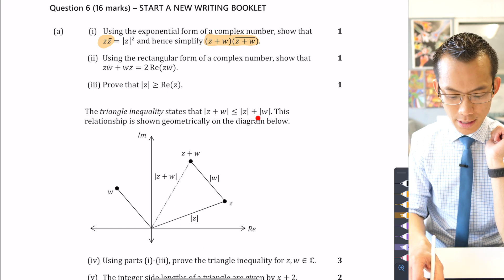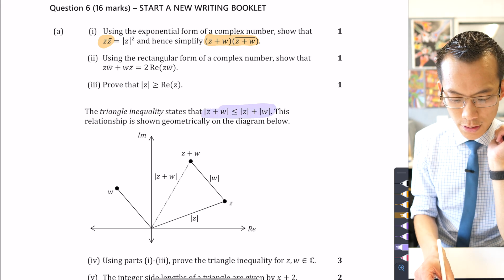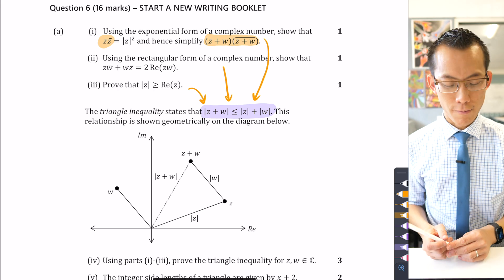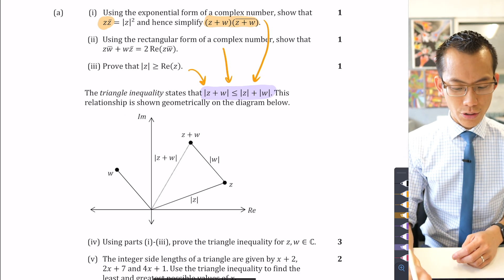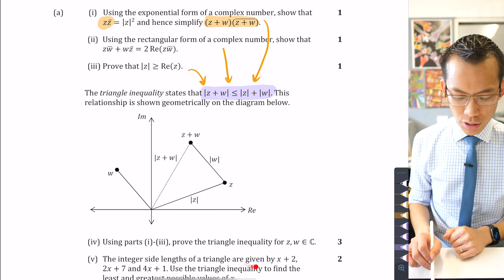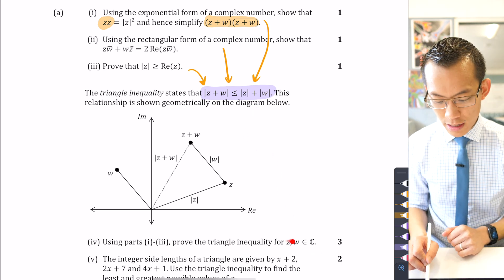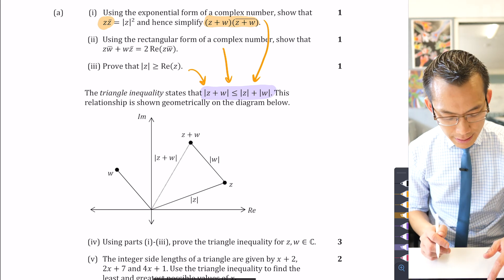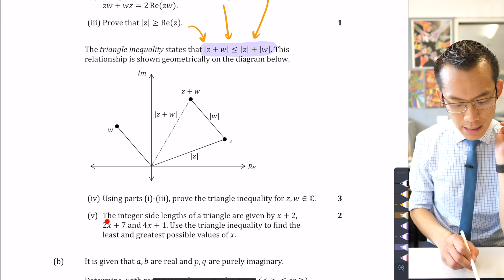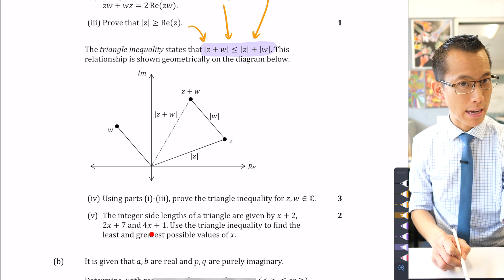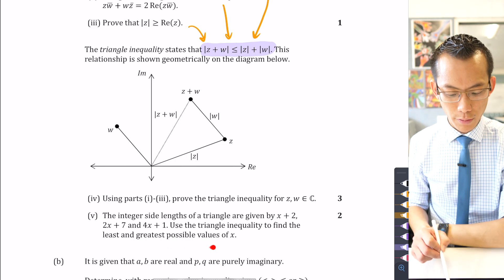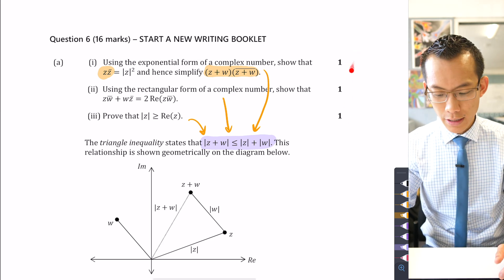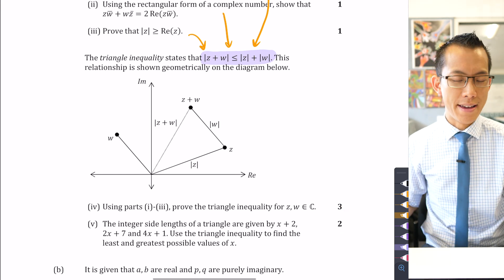We want to prove this inequality. You can see these pieces all fitting together — parts one, two, and three go into this particular result. The triangle inequality as I've introduced it seems like plain Euclidean geometry, but there's a version for real numbers too, and the fact that we're doing it for complex numbers is part of why we need to prove it using all these complex pieces. Then part five says: integer side lengths of a triangle are given by three algebraic expressions — use the triangle inequality to find the least and greatest possible values of x.